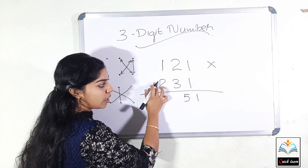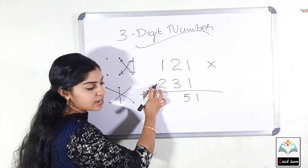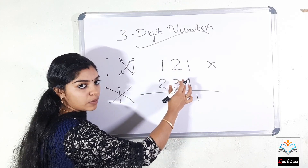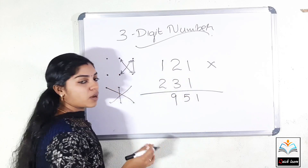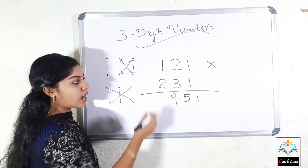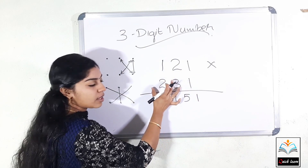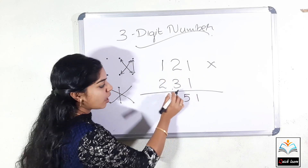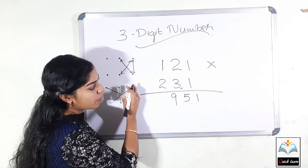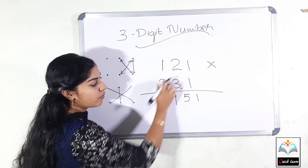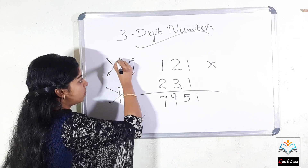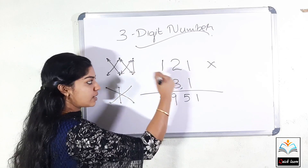We get 1, multiply 2, and 3. Then we get 1, 2, and 3. Now we get 2 multiply, 2 multiply, and 3. We get 9. Now we are going to multiply the 3 steps. We are going to multiply 2 numbers, then 3 numbers, then 4 numbers, and multiply the 3 numbers again.